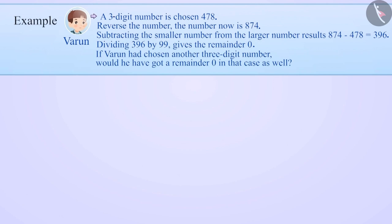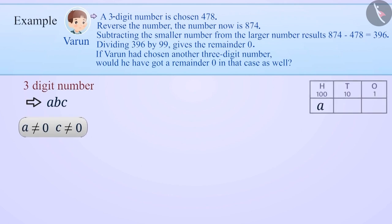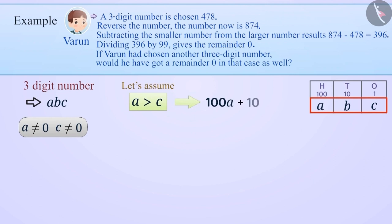Let us represent a three-digit number with ABC, in which A is the digit in the hundreds place, B in the tens place, and C in the units place. We will assume that A is greater than C. This number can be written as 100A plus 10B plus C.